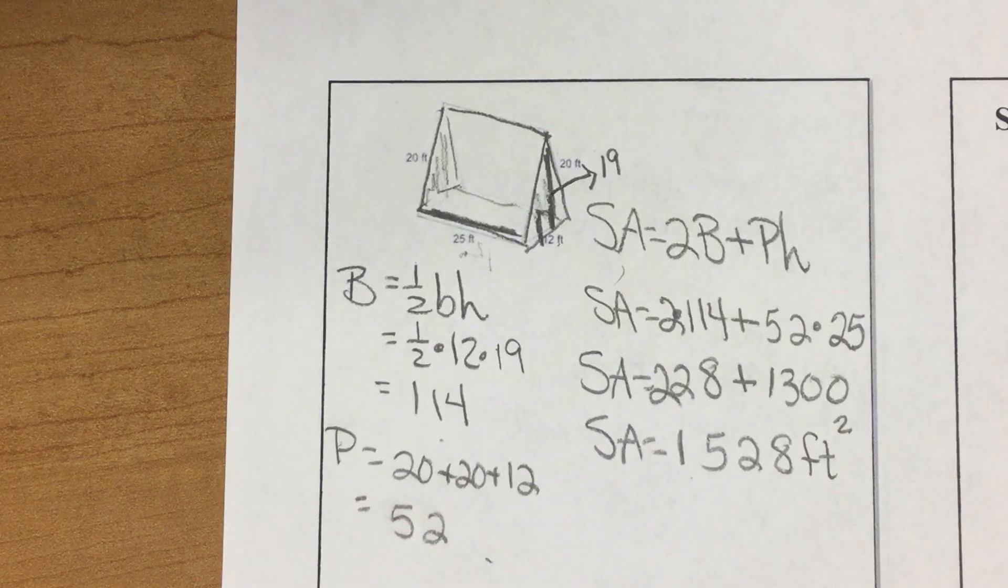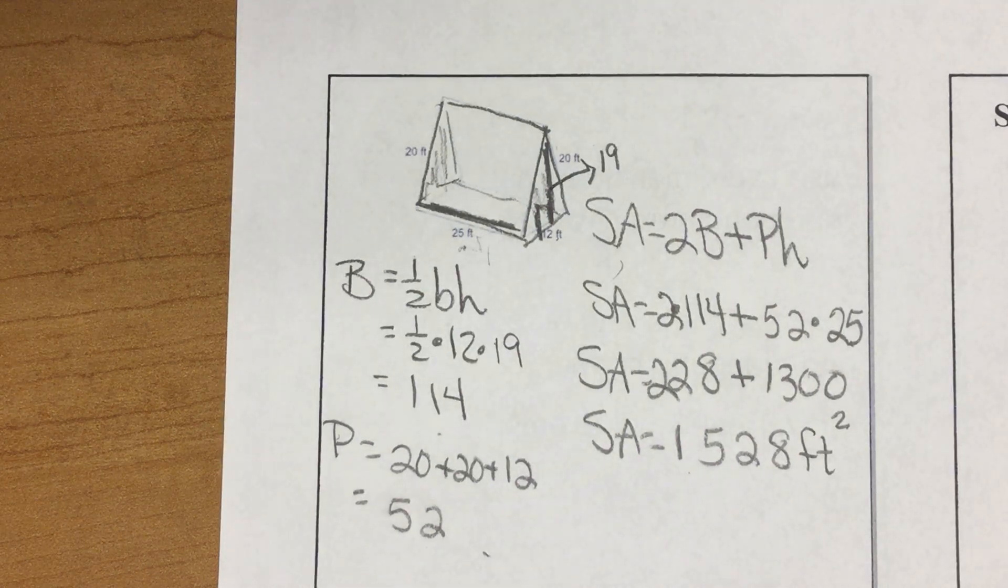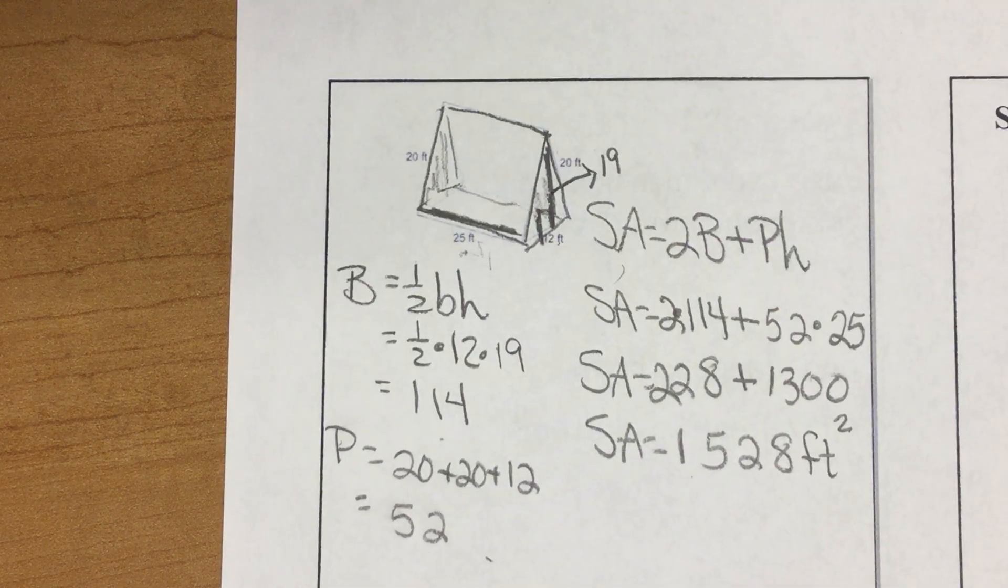That is surface area of prisms, 2 capital B plus pH.